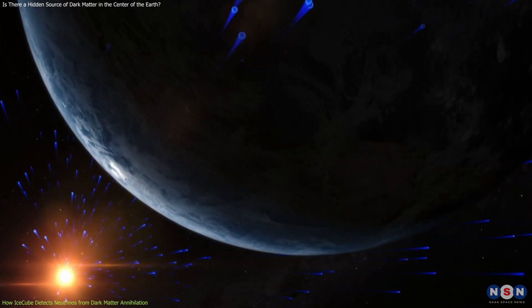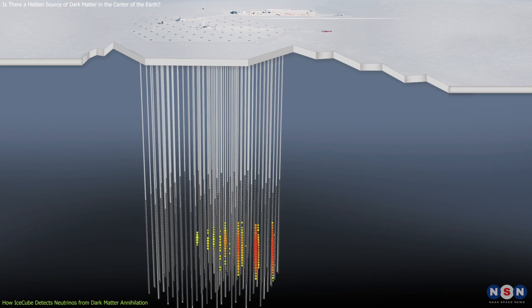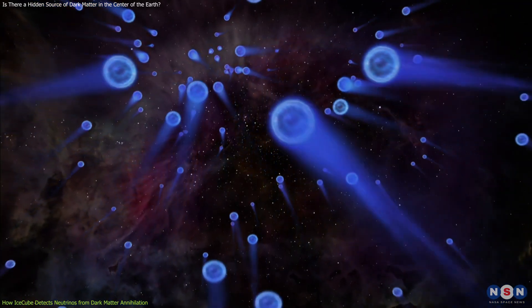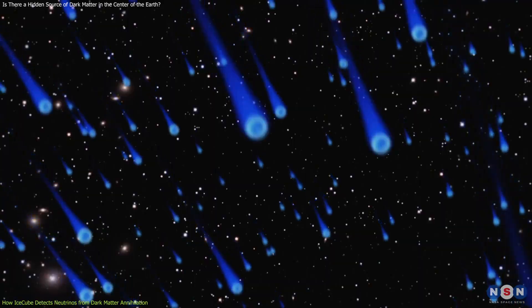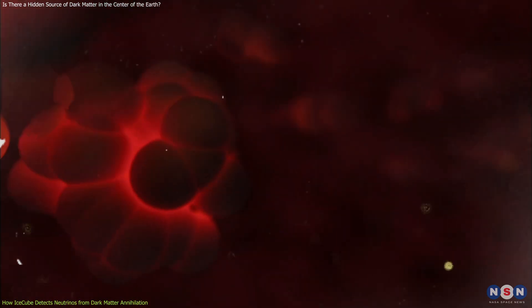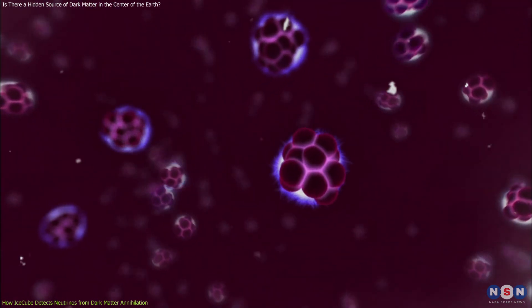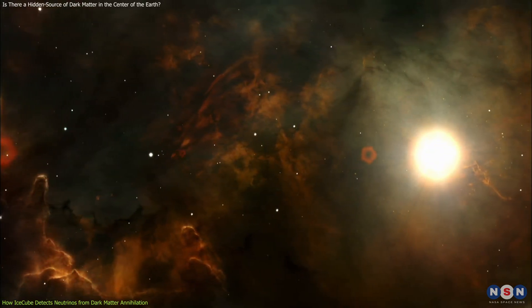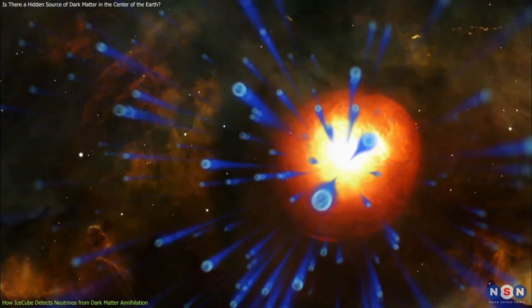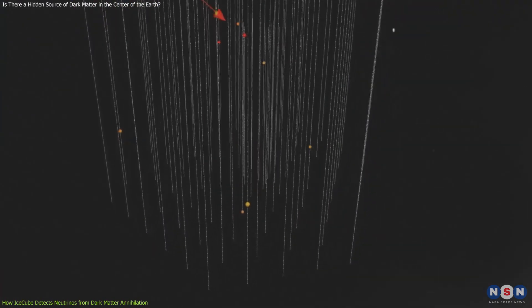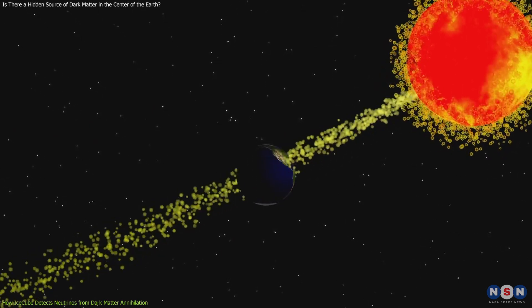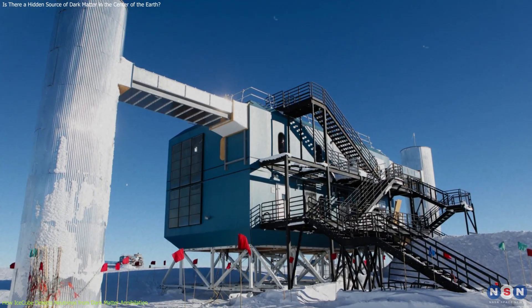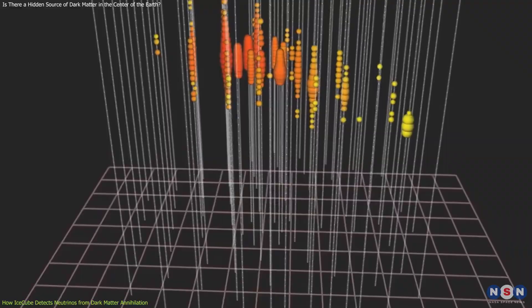This means that neutrinos from the center of the Earth would travel straight through the planet and emerge at the South Pole, while neutrinos from other sources would have to travel through a longer and more curved path. But how can IceCube tell apart neutrinos from different sources? Well, one way is to look at their energy. Neutrinos from dark matter annihilation are expected to have very high energies in the range of tens to hundreds of tera electron volts, TeV. This is much higher than most neutrinos from natural sources, such as cosmic rays or nuclear reactions in the sun. Another way is to look at their direction. Neutrinos from dark matter annihilation should come from a small region around the center of the Earth, while neutrinos from other sources should come from all directions. By combining these two criteria, IceCube can filter out most of the background noise and focus on the potential signal.